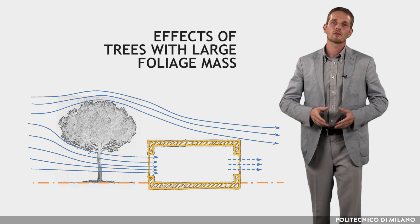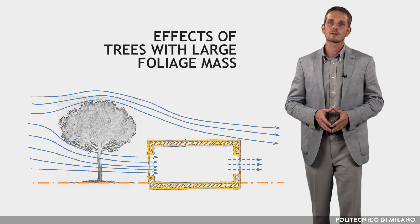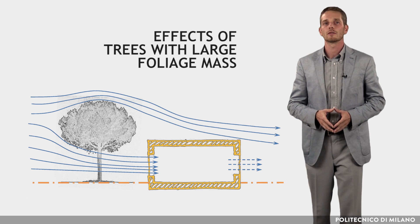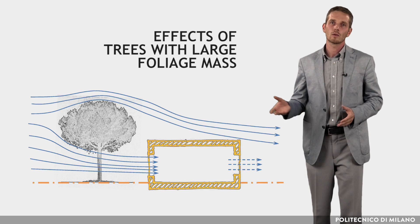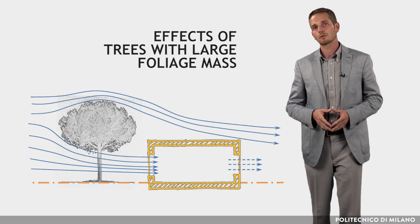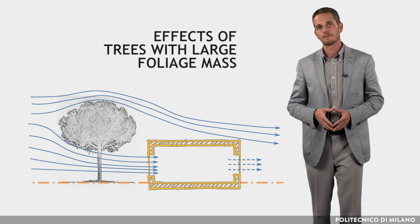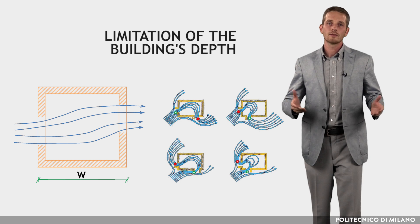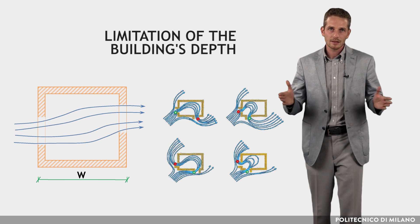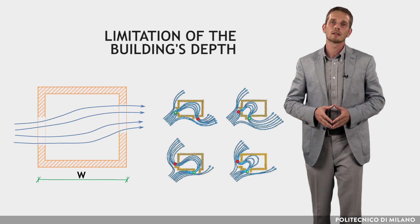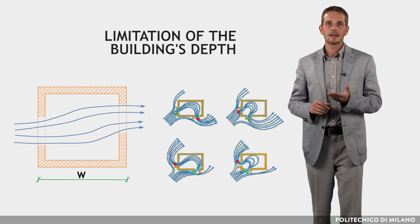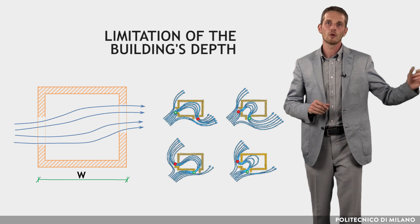Trees with large foliage mass with trunks bare of branches up to the level of the window deflect the outdoor wind downwards and promote air motion in the leeward portion of the buildings. An effective cross ventilation design must consider a limitation of the depth of the building to facilitate inward airflow from one facade and outward flow from the other.